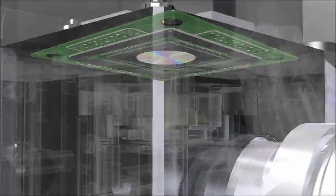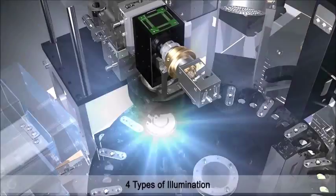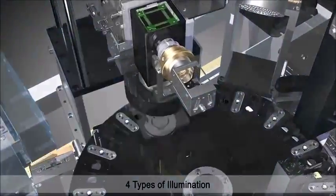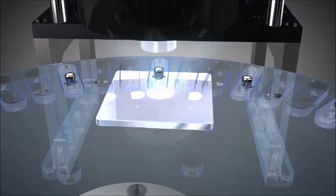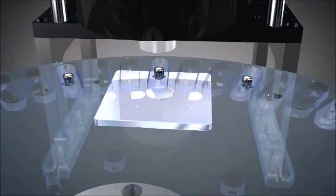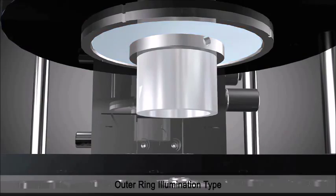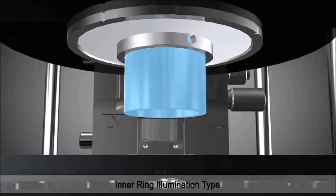WISCOPE captures images using four types of illumination: backlight illumination type 1 and type 2, outer ring illumination type, and inner ring illumination type.